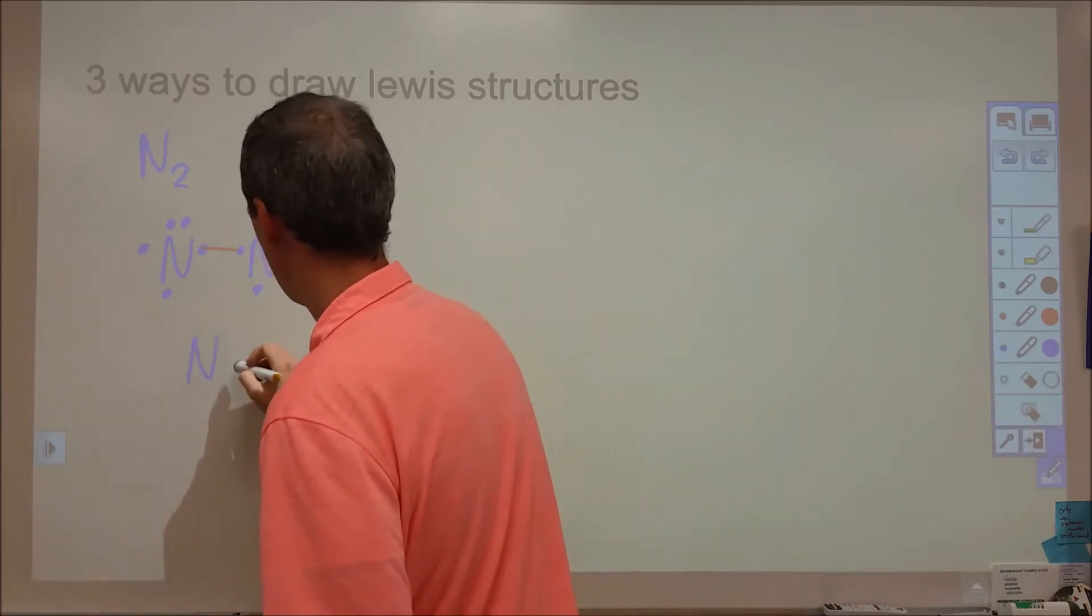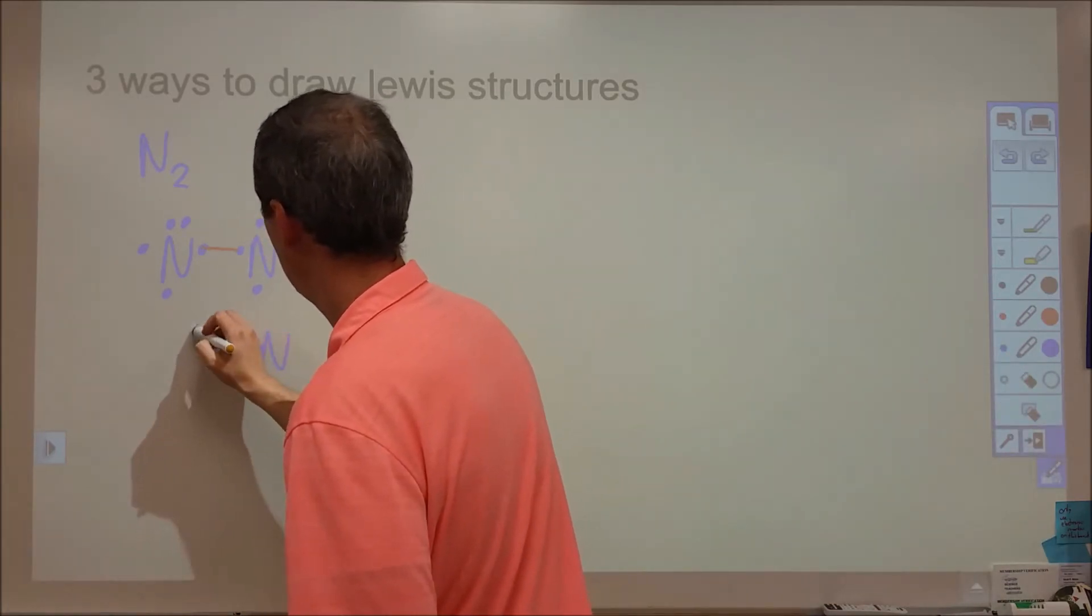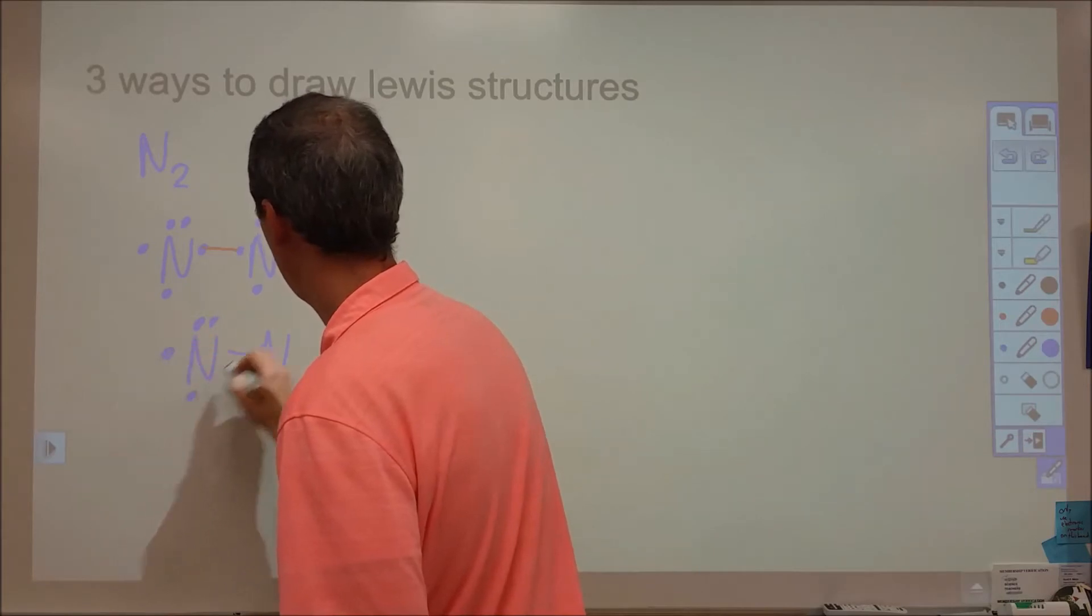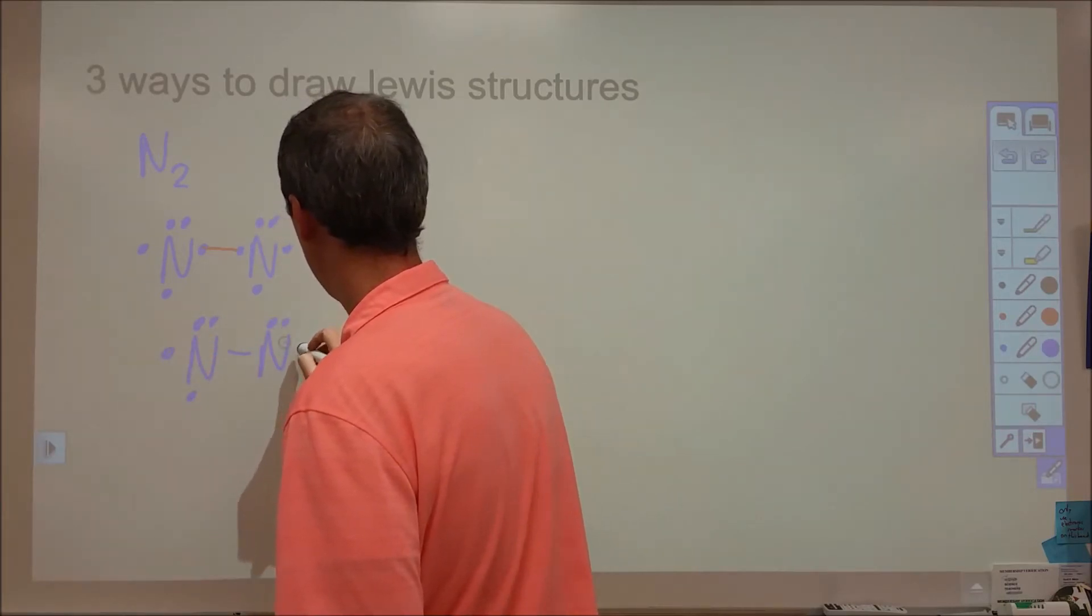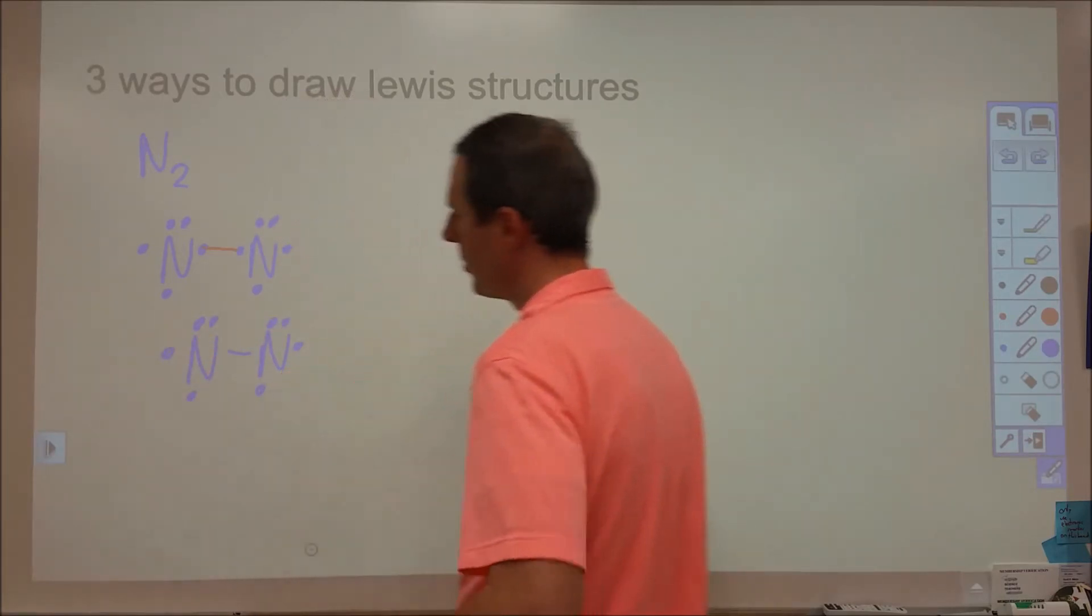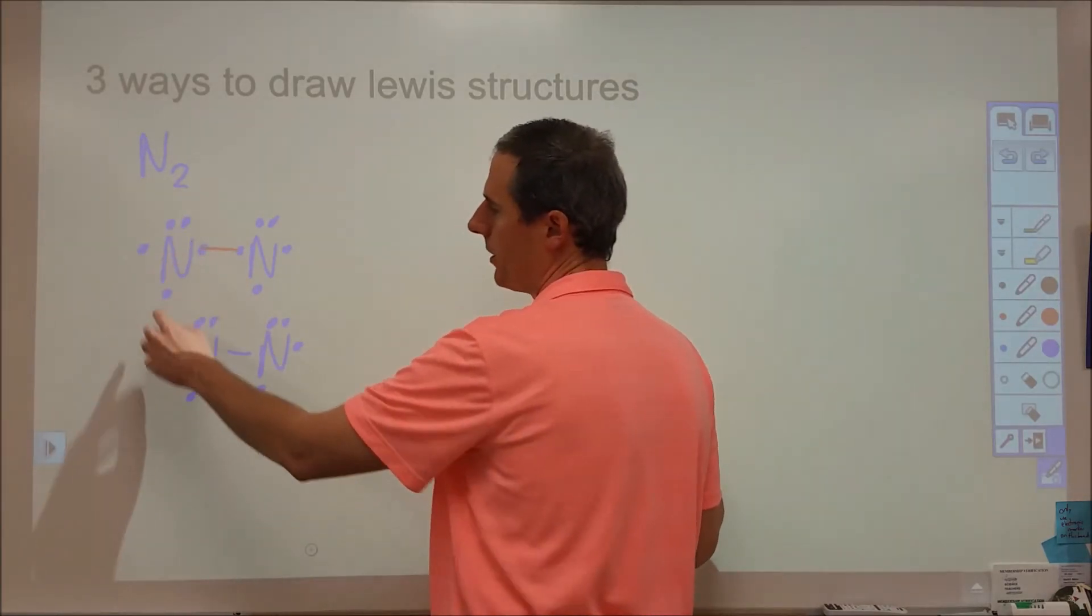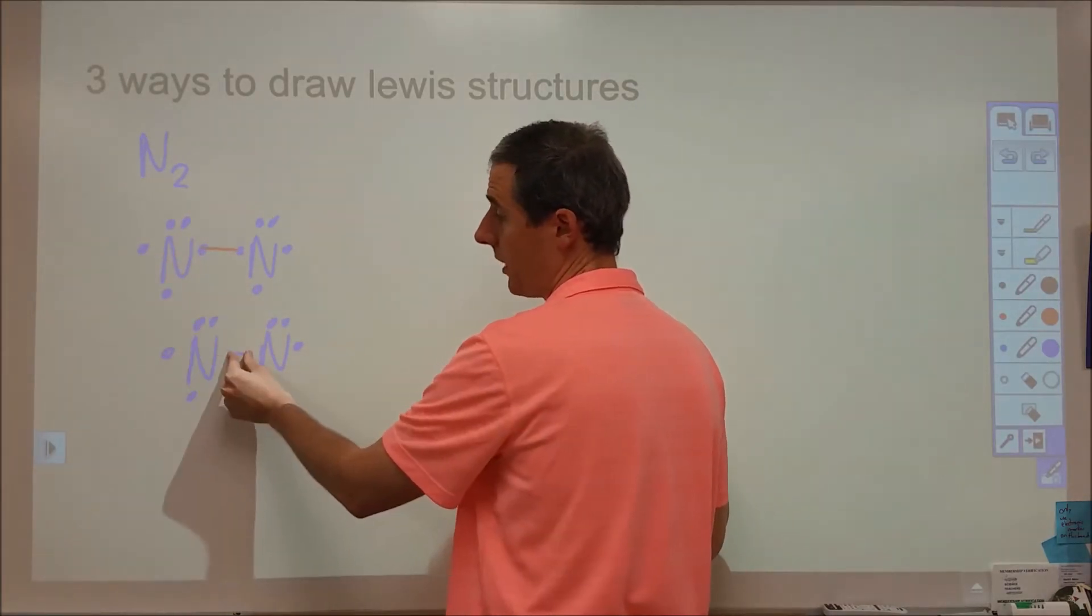Which is going to take us to here. We have 1, 2, 3, 4, 5, 6, 7, and 8. So by sharing these two electrons, we're going from having five electrons on each to having 2, 4, 6.